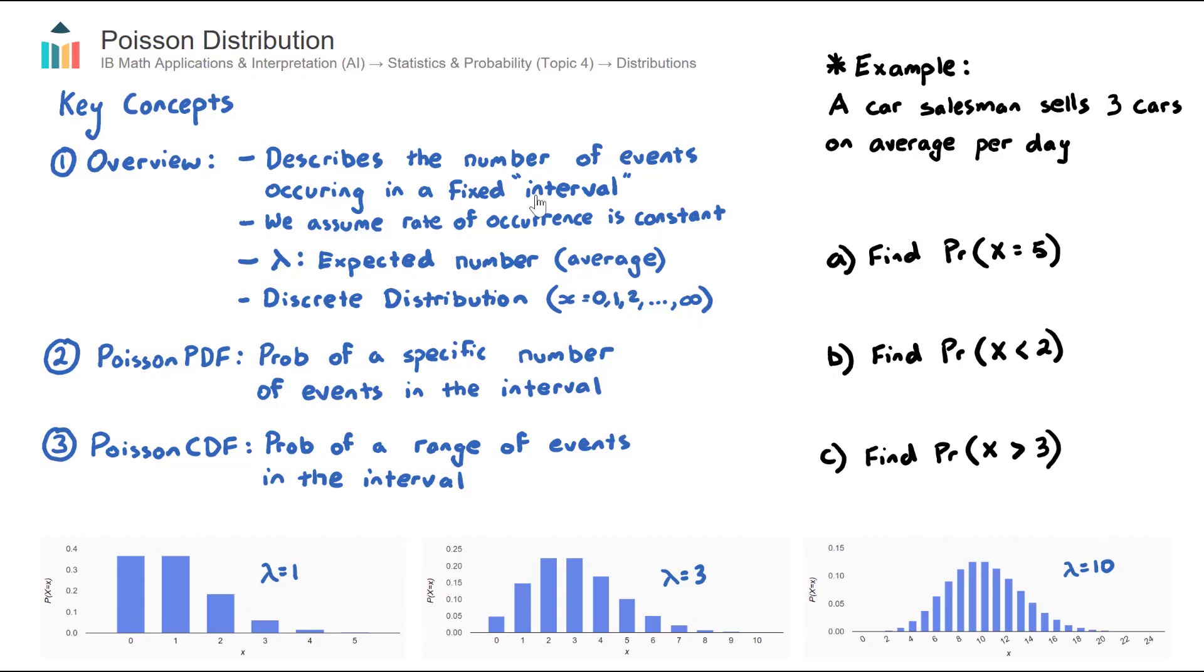Let's give some meaning to these points with this example. In this example, a car salesman sells three cars on average per day. So our interval of time here is per day, and the number of events is how many cars the salesman sells.